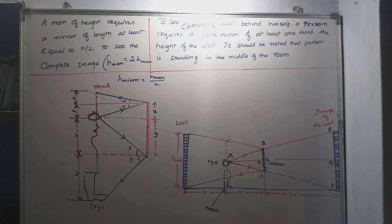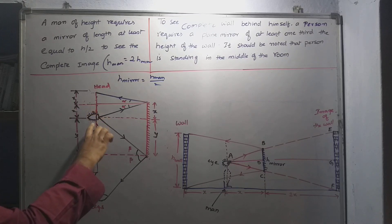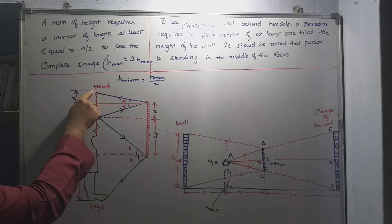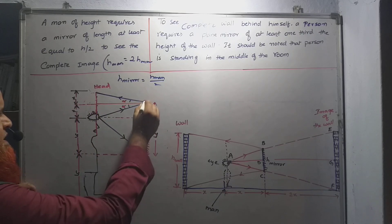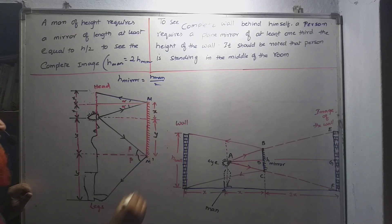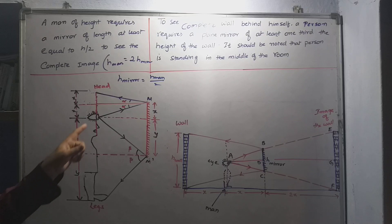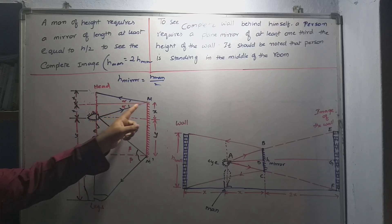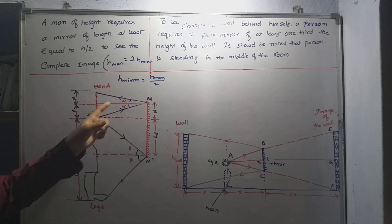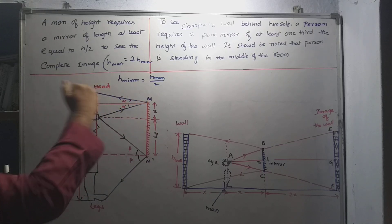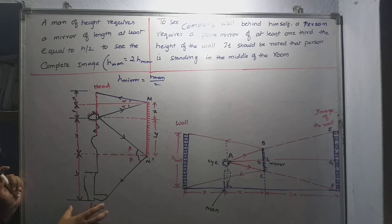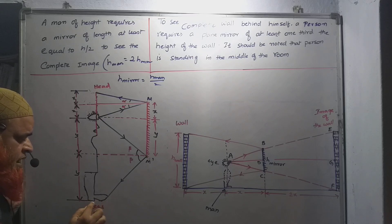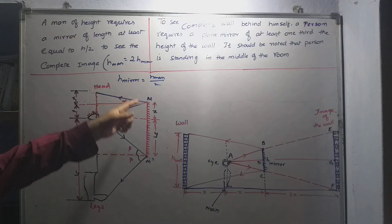Let us consider this is the complete body of a human being. This part is the head, this part is the legs, and this is the eye from where you are going to see. This is a mirror, and these are the edges of the mirror — let us take the edges as M and M dash. The light ray comes from the eye, strikes the topmost edge of the mirror, gets reflected back, and falls exactly on the tip of the head. The next light ray falls on the bottom edge of the mirror, gets reflected back, and falls on the legs — so from legs to head, you can see the complete image.